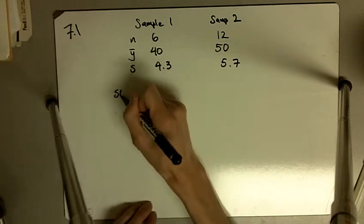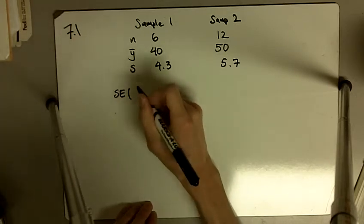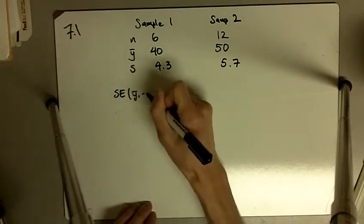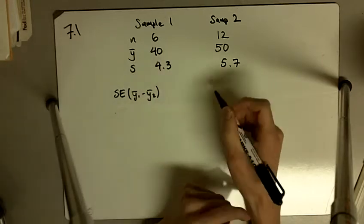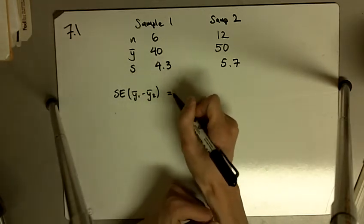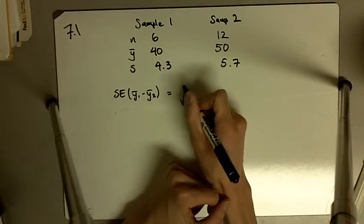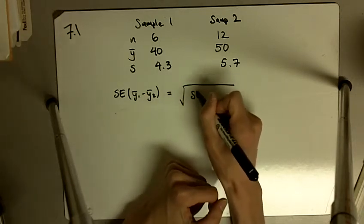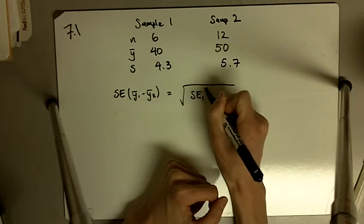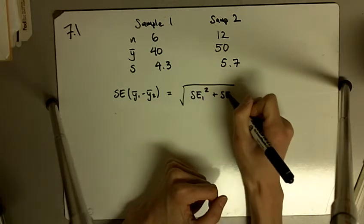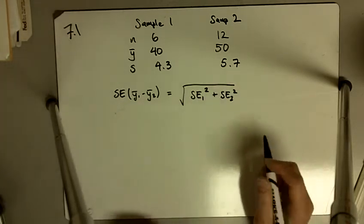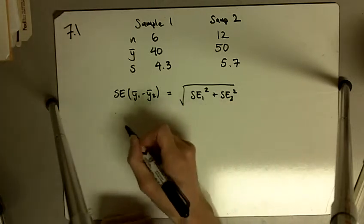And then it says find the standard error of Y1 bar minus Y2 bar. So the standard error of this is the square root of SE1 squared plus SE2 squared. It's just like the Pythagorean theorem.